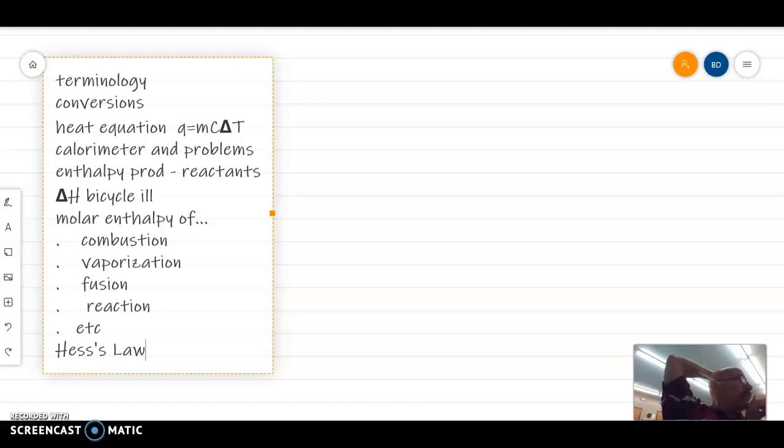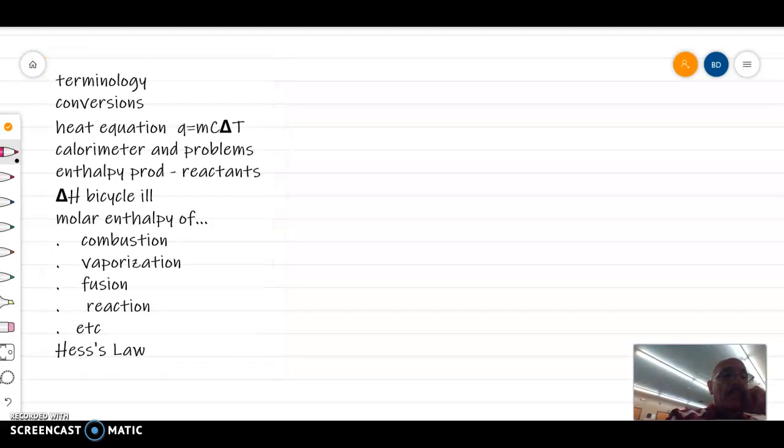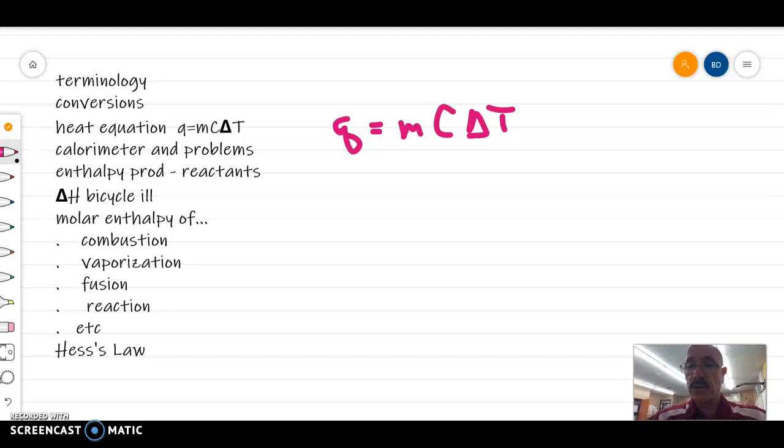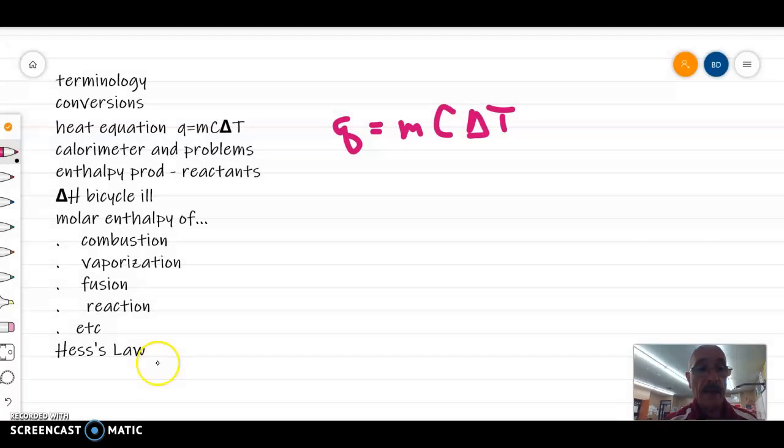Now, let's see if I can make this whiteboard do what it's supposed to do. Interesting. So, if we have a q equals mcΔT, we can do any number of problems similar to this. Let's see if I can find one real quick here. Okay, so I'm going to do the calorimeter problem on page 986. It looks like this. Can you see it right there? I think it's this one right there. So, find that on page 986, section 15.2, question number six.